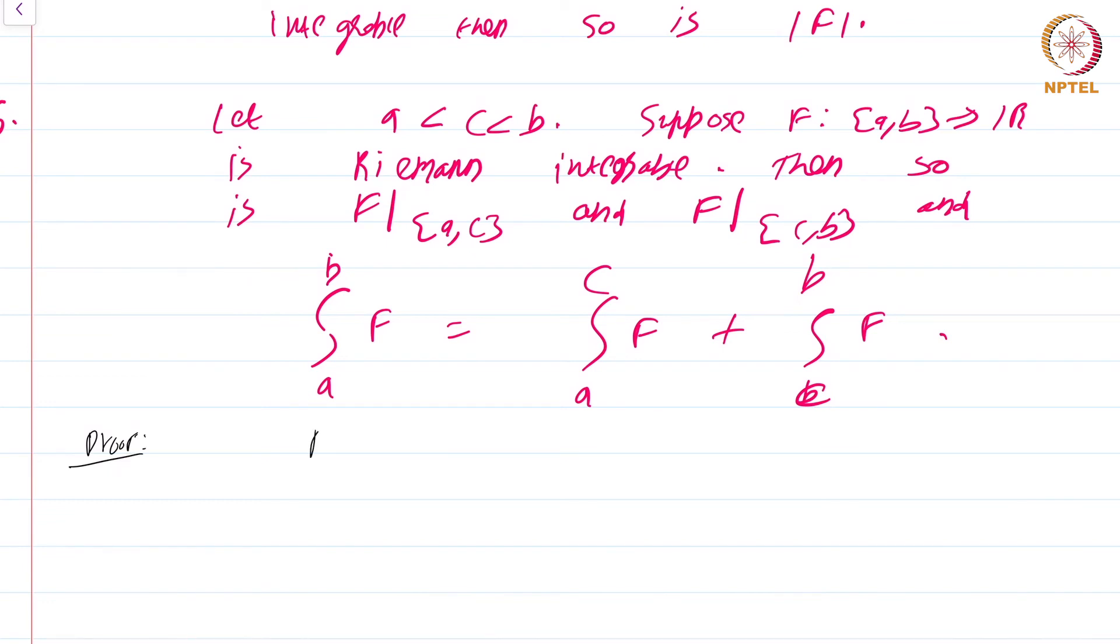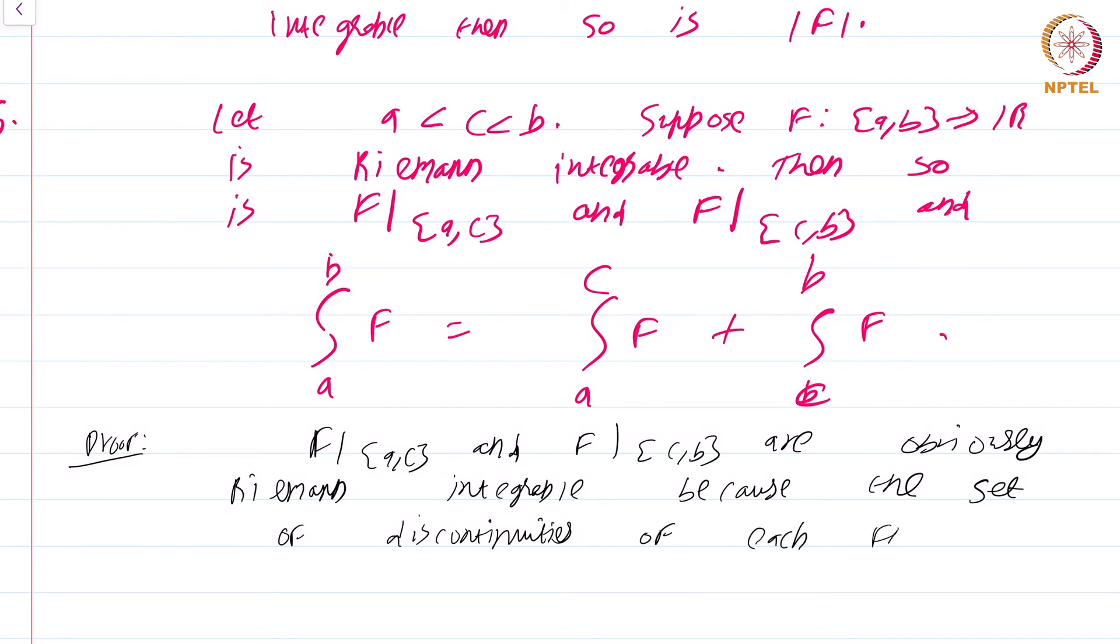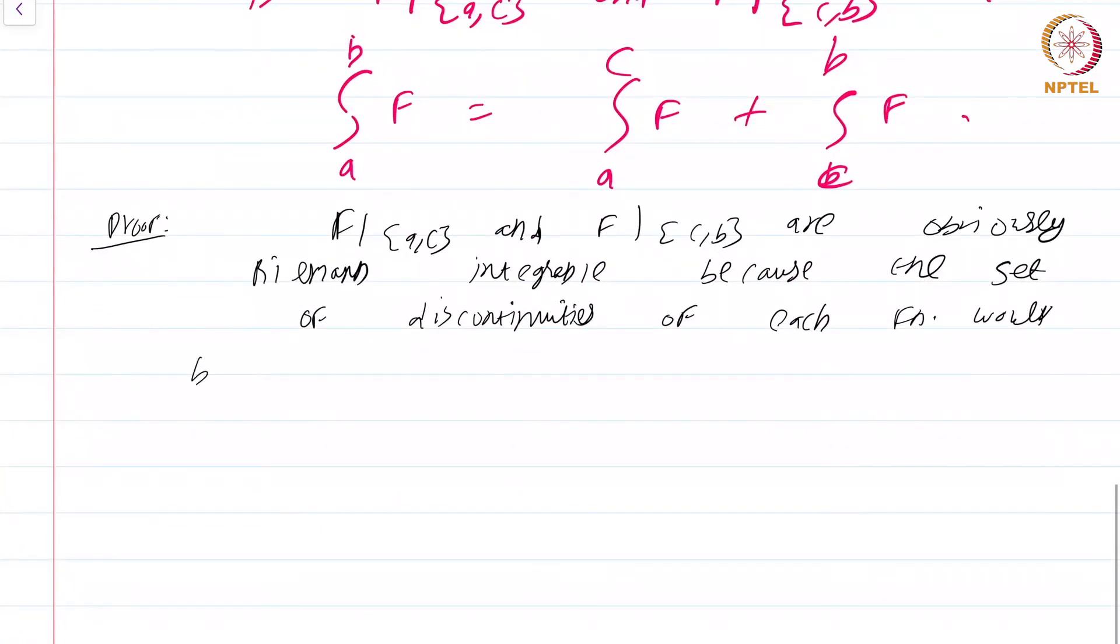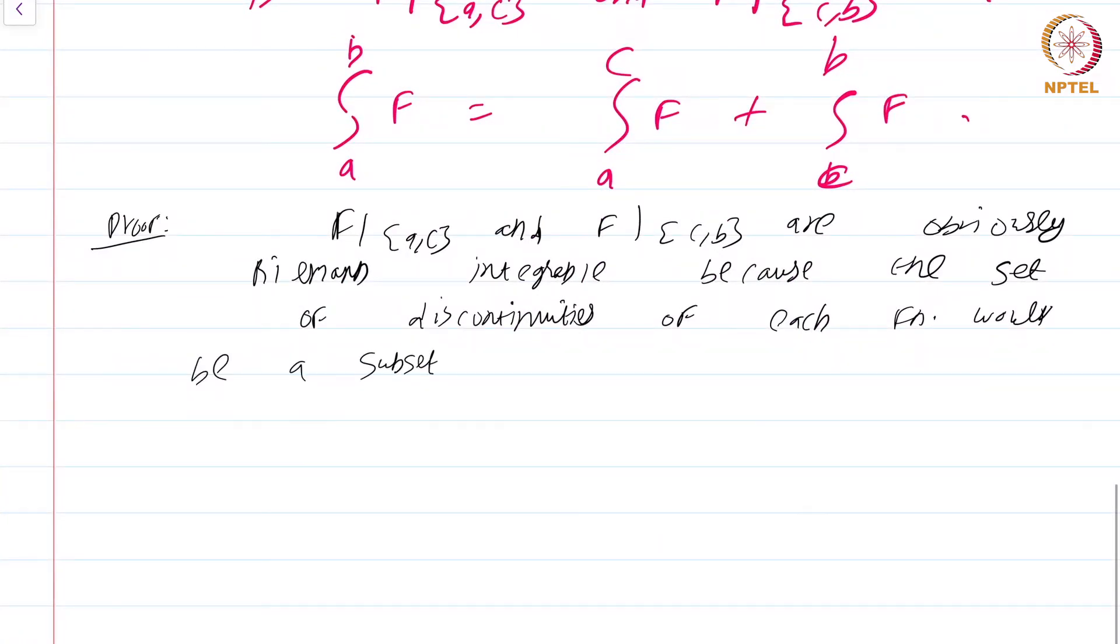f restricted to [a,c] and f restricted to [c,b] are obviously Riemann integrable because the set of discontinuities of each function would be a subset of the set of discontinuities of f. That is obvious. So both functions will obviously be Riemann integrable.